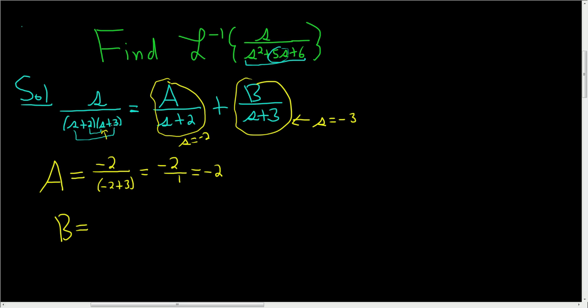Then we come over here and we cover up the s plus 3, and we plug in negative 3 into what's left. So negative 3 over negative 3 plus 2. So this is negative 3 over negative 1, which is 3.